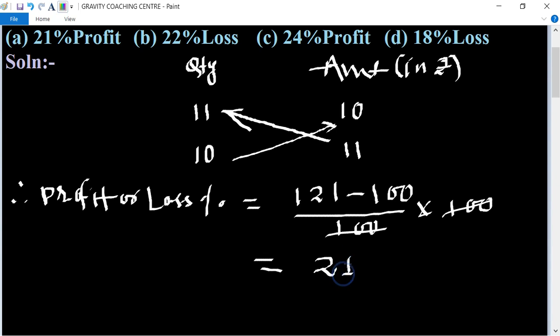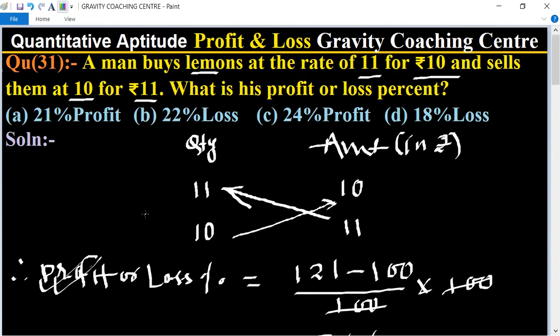So this number is a positive number, so 21 percent is a profit. Option A is the correct answer.